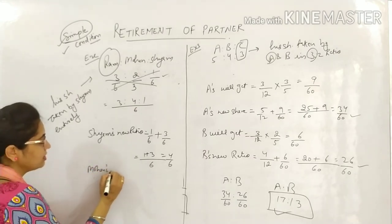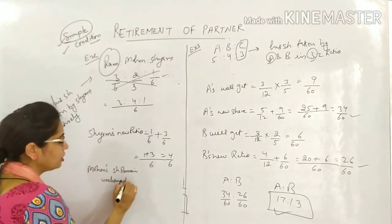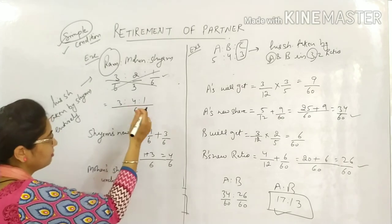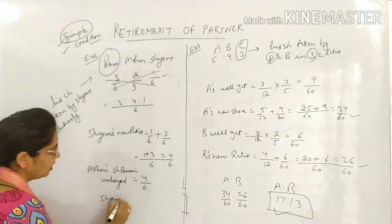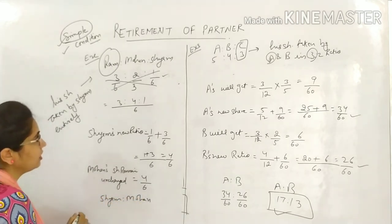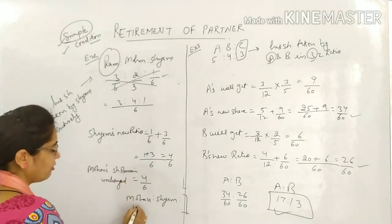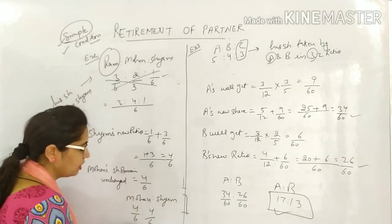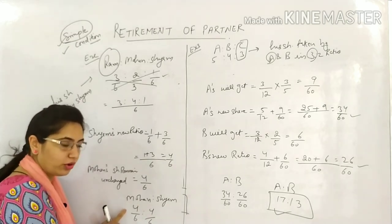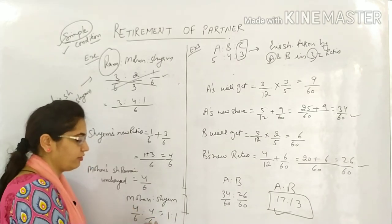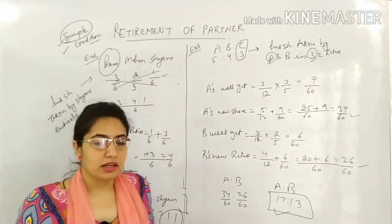Mohan's share remains unchanged at 4/6. New ratio between Mohan and Shyam: Mohan has 4/6 and Shyam also has 4/6. Since denominators are the same, ratio is 4:4, which simplifies by table of 4 to 1:1. So Mohan and Shyam become equal partners after Ram's retirement. This is how we calculate the new profit sharing ratio.